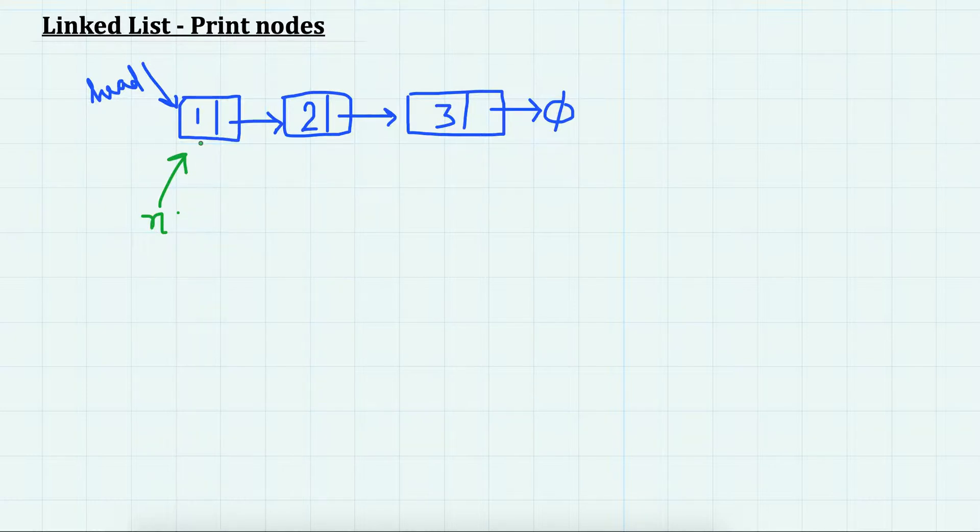And while this is not null, so initially we will see that it's not null. If it's not null, then make n equal to its next.